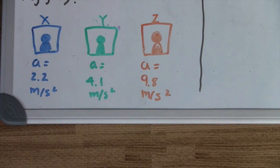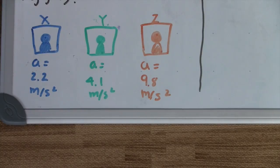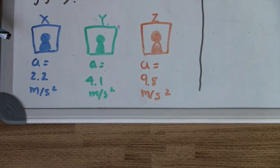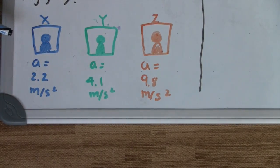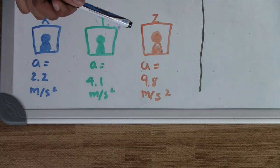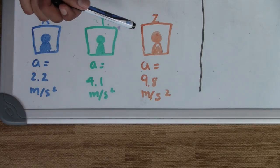For this problem, we have three suspects: Suspect X, Y, and Z. We know the acceleration of each suspect if they were put on this Atwood machine, so we need to find the acceleration of the person on the Atwood machine and match it to one of these suspects. Suspect X has an acceleration of 2.2 m/s², Suspect Y has 4.1 m/s², and Suspect Z has 9.8 m/s².